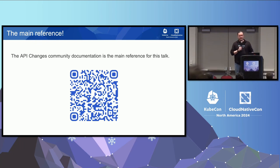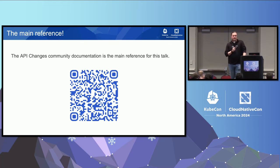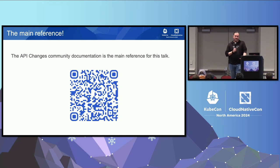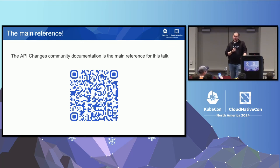The main reference for all of this is the API Changes doc. It's a little hard to find, so I have put a QR code up there. The API Changes doc is like the Bible for all of this information — everything I have in here is based on that. It's a very helpful doc if you are designing APIs, and you really need to read and internalize it. However, the reason I'm giving this talk is it is over 10,000 words long — it's very long, very wordy, and can be hard to understand. So I'm trying to give you a bit of a leg up here.